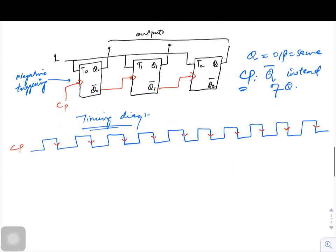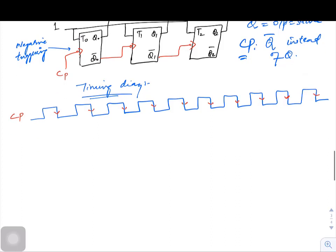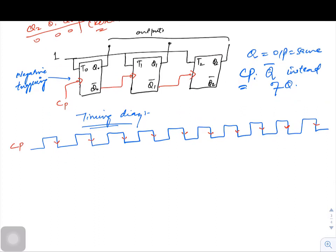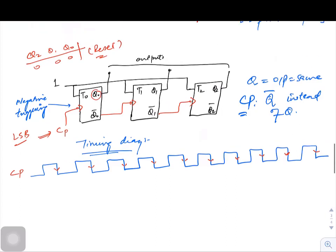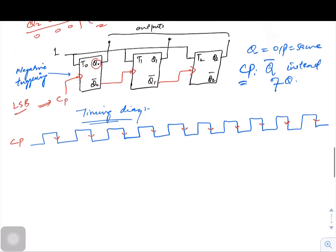Again, the initial values of Q2, Q1, Q0 are zero, zero, zero. All flip-flops are reset. Already I have told you in previous videos, wherever you are giving a clock pulse, that acts as LSB. Clock pulse is given to Q0, so Q0 is your LSB.